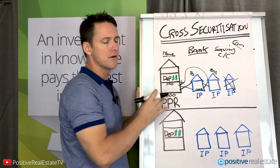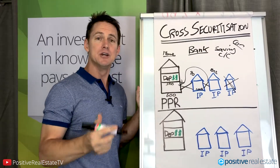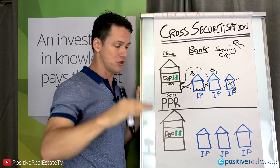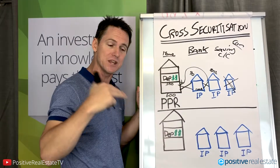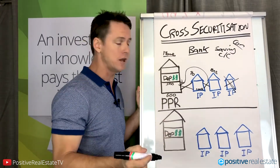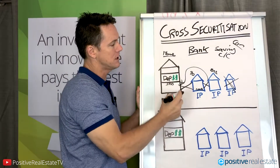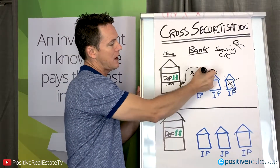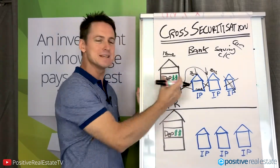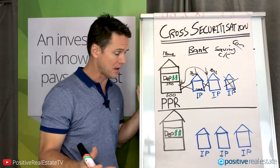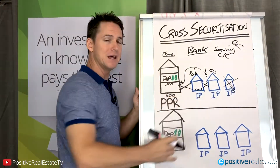So cross-collateralization. When you look at the stats, the average property investor doesn't get past two investment properties. A huge amount - 80% of people - fail to get past three investment properties when they start out their investment journey. And this is why. Cross-securitization, cross-collateralization: the more risk you have with one bank, the less loan-to-value ratio and the less money they want to lend you. That's why we get stuck and we don't get to that next property.